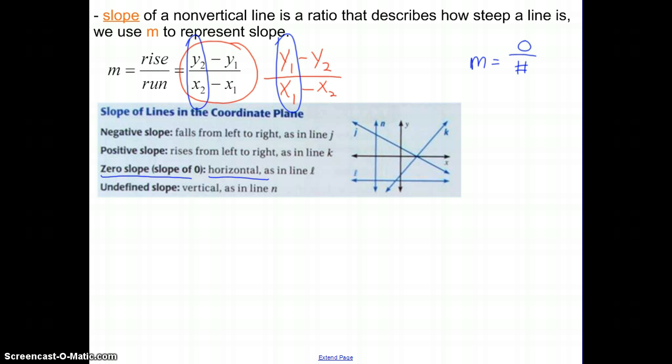Vertical lines: there's a whole bunch of rise, but the run, left to right, for a vertical line, there is no running. It's just straight up or down. So then you'd have it over zero. A number, a fraction, when you divide it by zero, you can't do that. So vertical lines, it's an undefined slope. It's not a number, it's not anything, it's just undefined slope. You cannot divide by zero. That number does not exist.